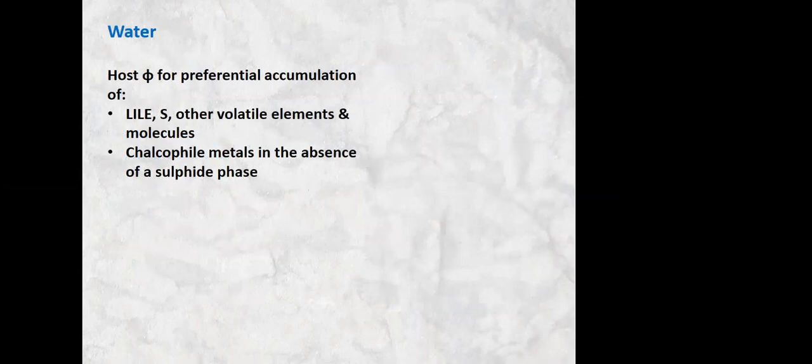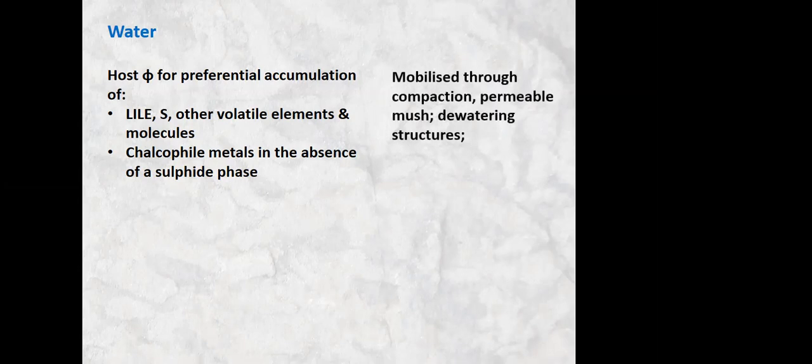So water acts as the host phase for the preferential accumulation of elements such as the large ion lithophiles, which are typically soluble in aqueous solutions, as well as other volatile elements and most importantly, sulfur and selenium. And especially when sulfur starts complexing with oxygen and then can bond with metals and produce soluble molecules, water can become quite an important component in a magmatic system. So in high temperature systems, possibly with the addition of chlorine to these complex molecules. So chalcophile metals where there's not a sulfide phase for them to go to, such as sulfide solids or a sulfide liquid, they don't want to be in silicates. So if they're in a silicate magmatic system and all the sulfur gets dissolved into an aqueous phase, the chalcophile metals may well follow it, especially elements like the PGE and copper, who have nowhere else to go. Because in the silicates, nobody loves them.